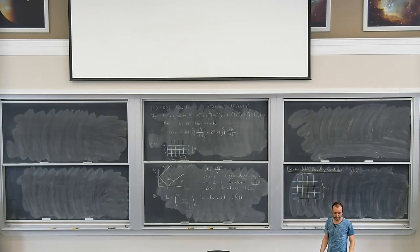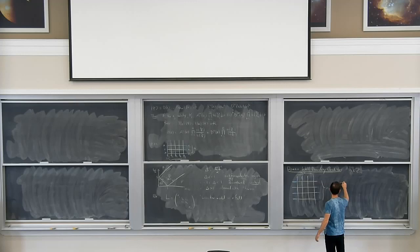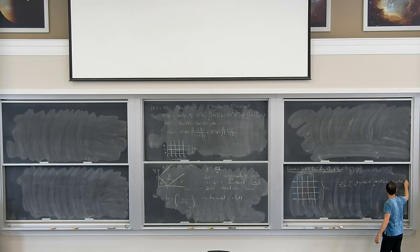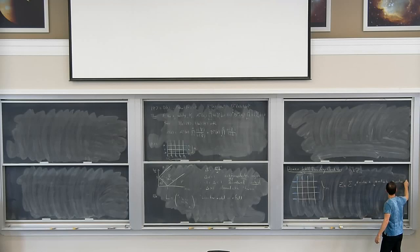In principle, you can define the partition function of this model as usual — the sum of Boltzmann weights: A to the number of vertices of type A, B to the number of type B, and C to the number of type C. Now, we want to use the integrability underlying this model — that means we make it inhomogeneous. We introduce parameters x_1, x_2, ..., x_n attached to each row, and y_1 up to y_n attached to each column.